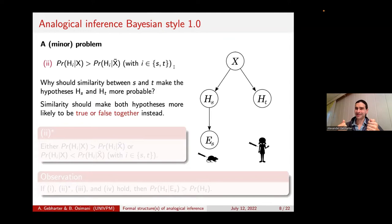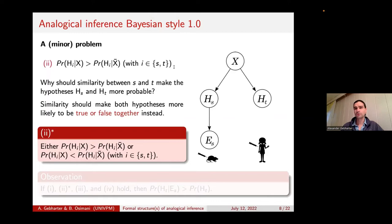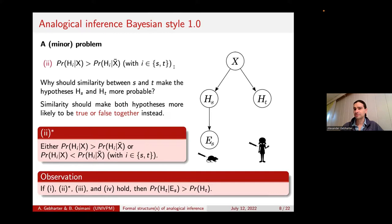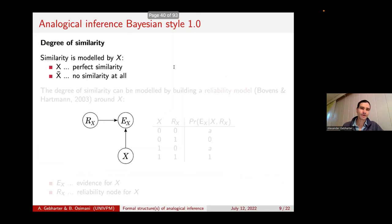That's not really a large problem — it can easily be fixed. We can replace assumption two with two-star, which just expresses the intuition just mentioned. Two-star says that if the systems are indeed structurally similar, then both hypotheses are either more likely to be true together or more likely to be false together. If we replace the original condition two with the new assumption two-star, we can still get the analogical inference running. Keep this intuition in mind: structural similarity should make the hypotheses more likely to be true or false together, as this plays a major role later on.